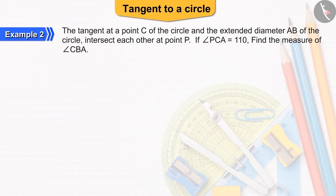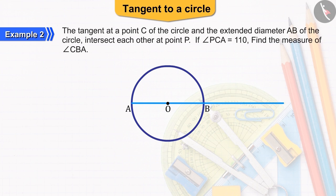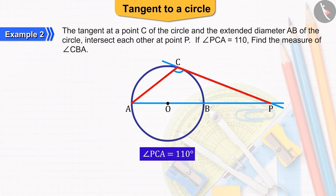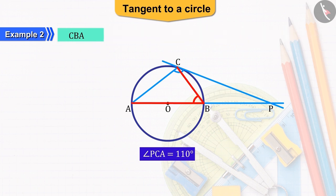Let us first draw a figure for this question. Suppose, there is a circle with centre O and diameter AB. On extending AB, it intersects the tangent formed at point C on the point P. From the question, we know that the value of angle PCA is 110 degrees and we have to find the value of angle CBA.